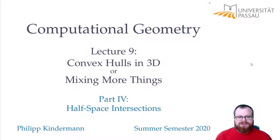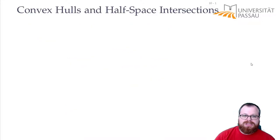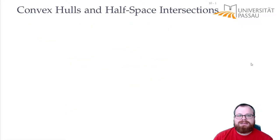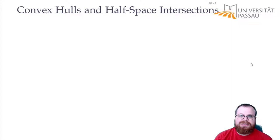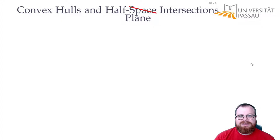First, let's do some kind of interlude. We want to look at half-space intersections. If you remember, the convex hull is the intersection of all those half-spaces that contain all the points. Let's first go back to the two-dimensional case — it's a bit easier. There, the convex hull is the intersection of half-planes that contain all the points.